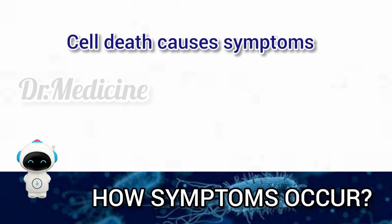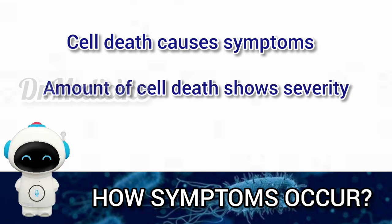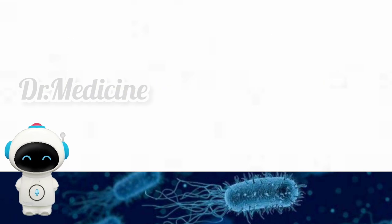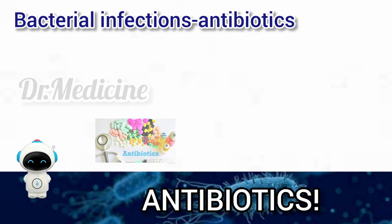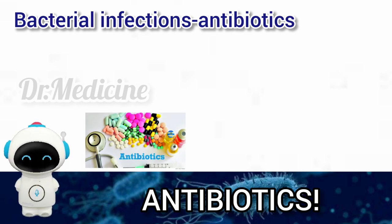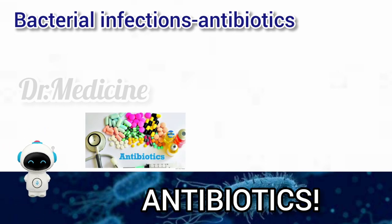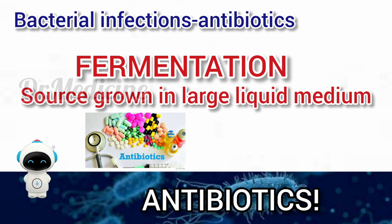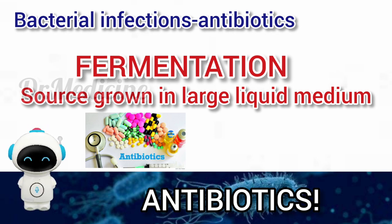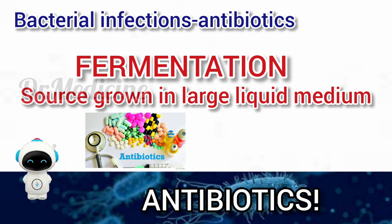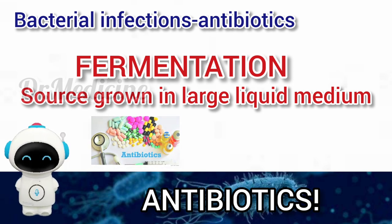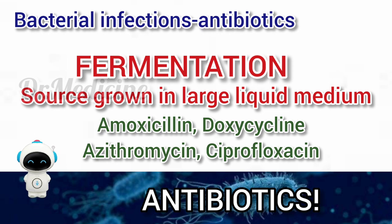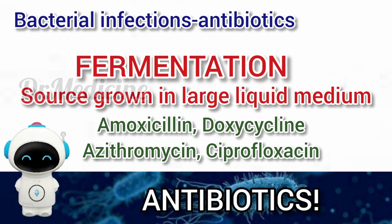Cell death causes symptoms, and the amount of cell death determines the severity of symptoms. Bacterial infections are usually treated by antibiotics. Industrially produced antibiotics are made by fermentation, where the source microorganism is grown in a large liquid growth medium. Infections like TB and other bacterial infections can be treated with antibiotics such as amoxicillin, doxycycline, azithromycin, and ciprofloxacin.